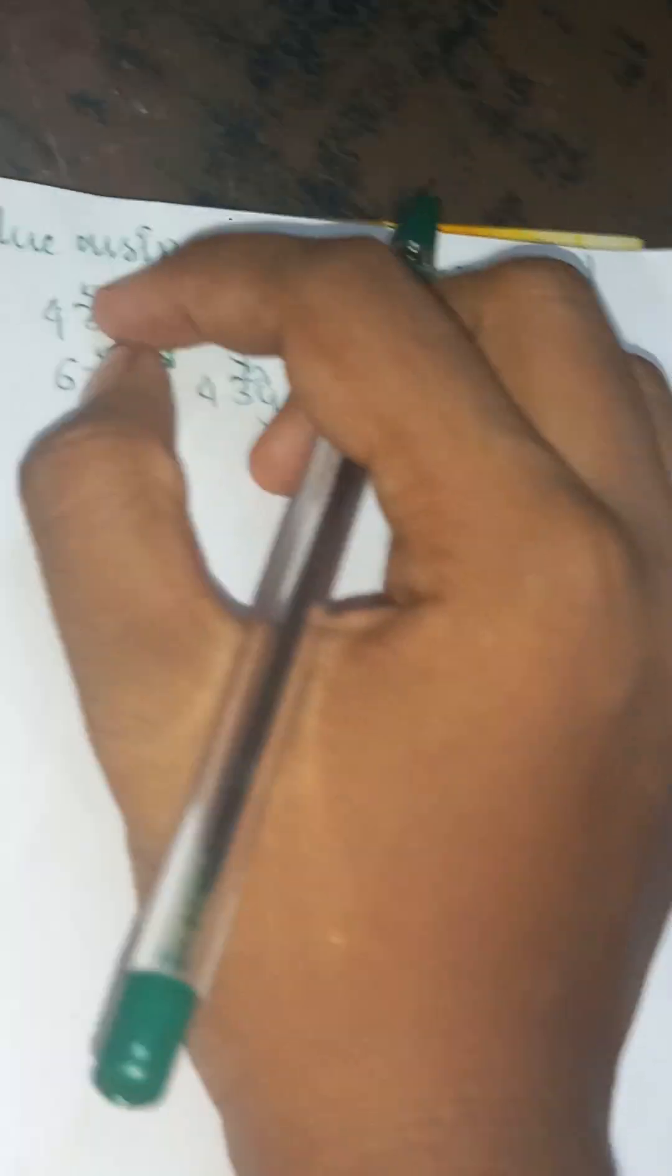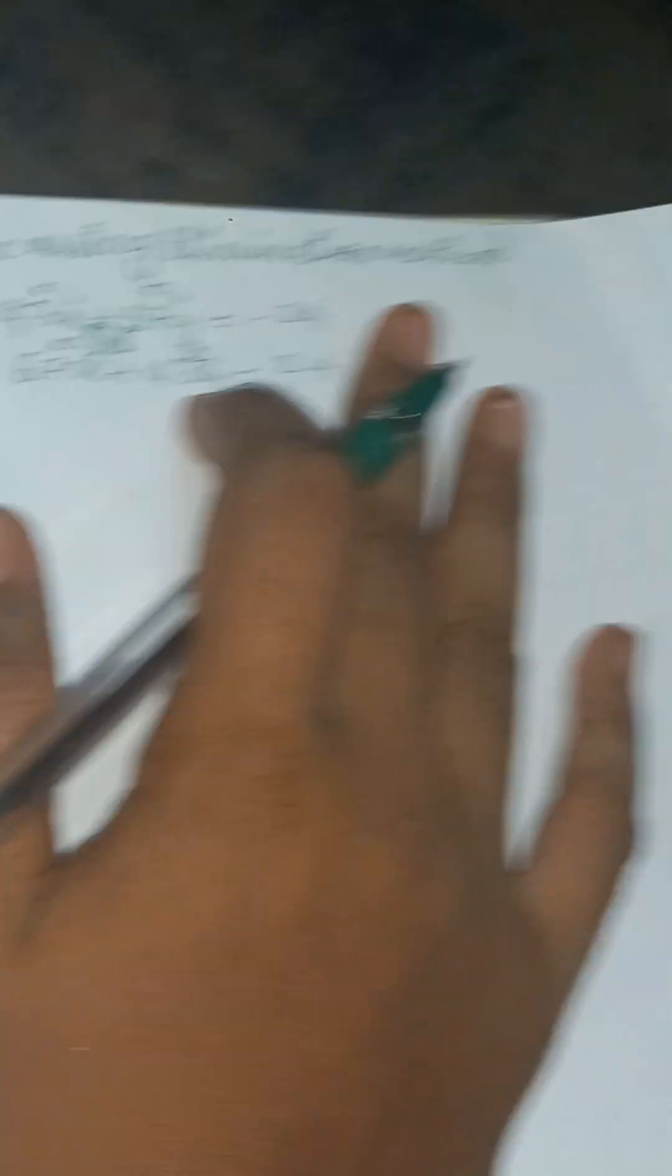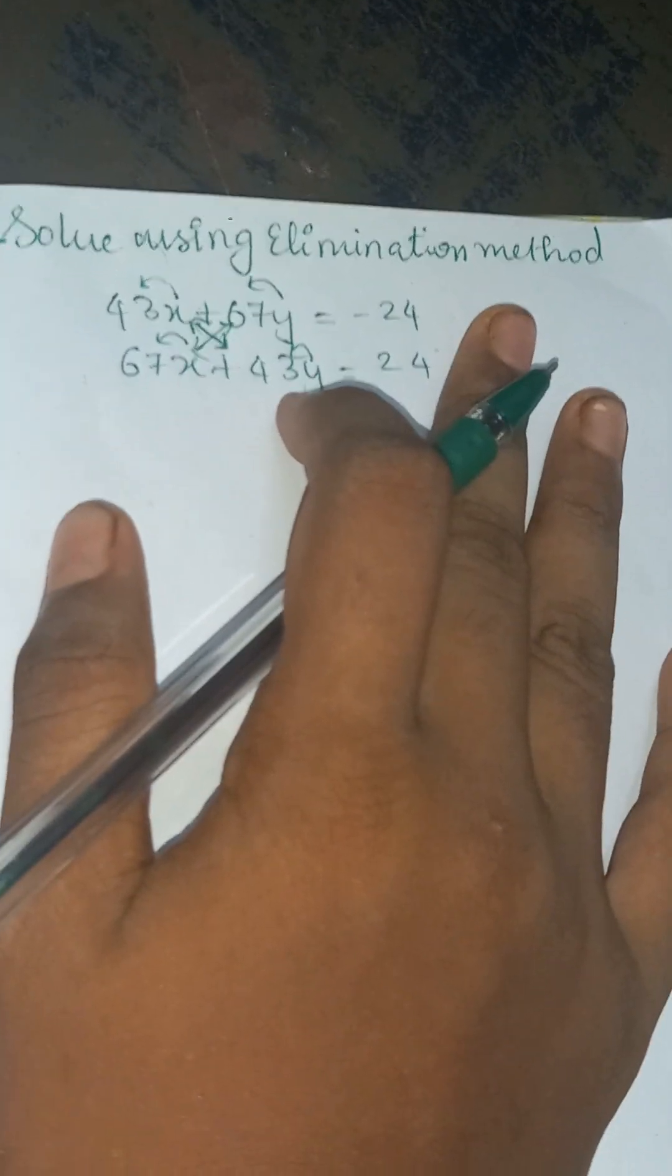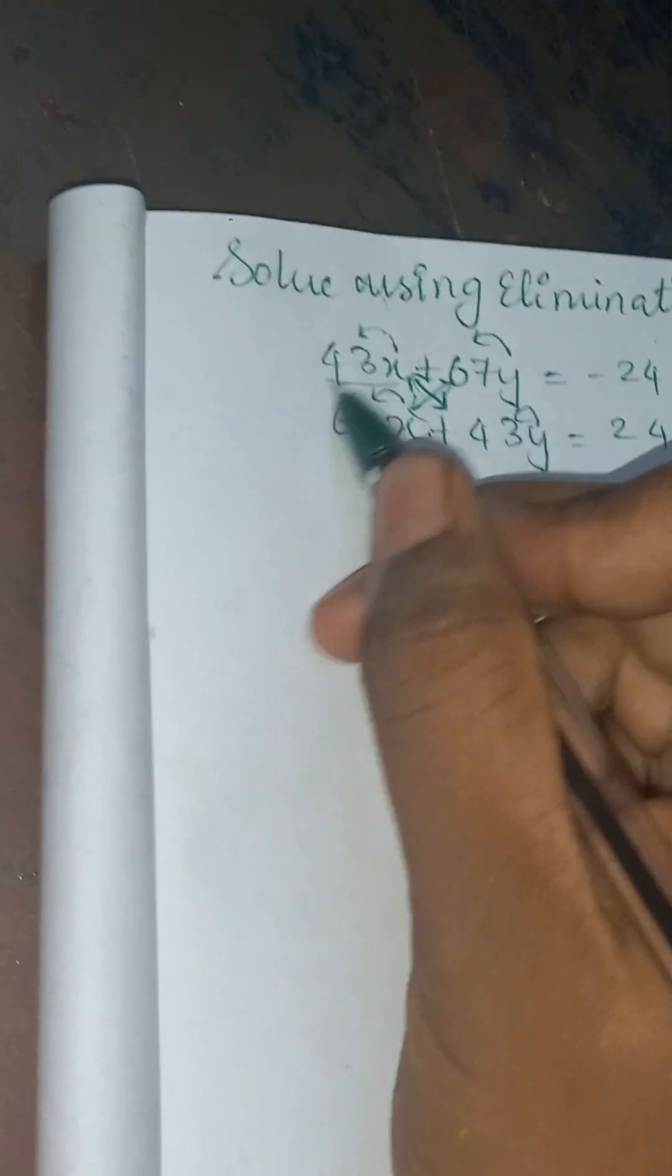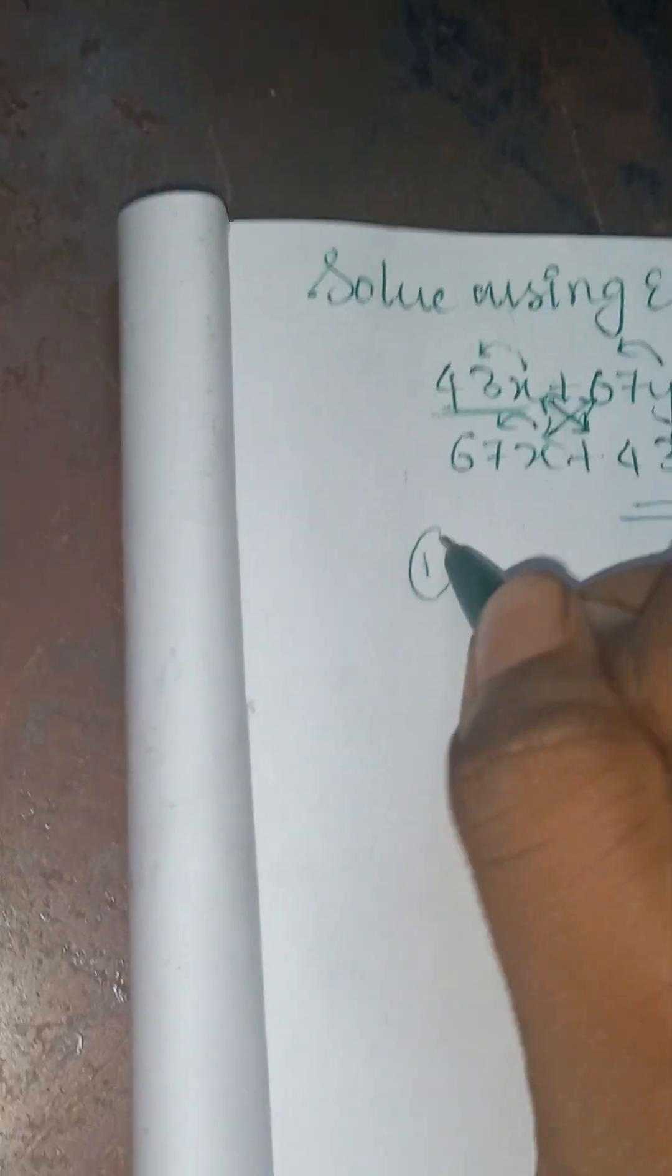Many students tend to do this in a very tough manner, but in this video I will be discussing an easy method to do this particular question. First of all, in such questions where your x and y coefficients are interchanged, the first step is to add both the equations.